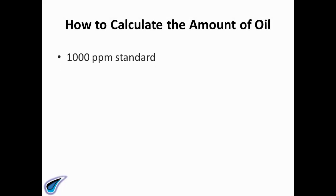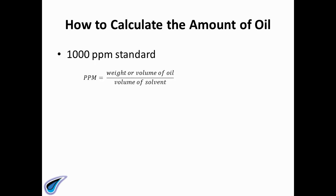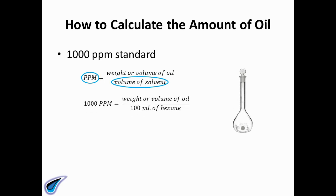Let's say we are preparing a thousand ppm standard. Take the equation from the previous slide. You know the ppm and the volume of solvent because you will be making the solution in a 100 milliliter volumetric flask. Fill these known values into the equation. Your volume of solvent is in milliliters and not liters, so convert to the correct units.